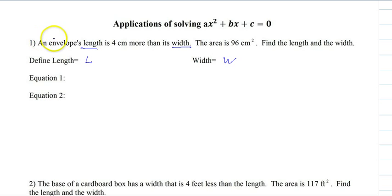Let's look at our first sentence. It says an envelope's length - we just have to translate. So the length is L, is is equals, and then it's 4 centimeters, more than means plus, and width we assigned W. So there we go, L equals 4 plus W.